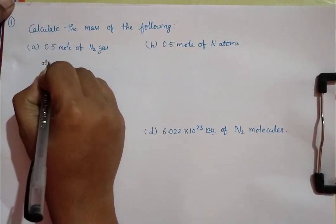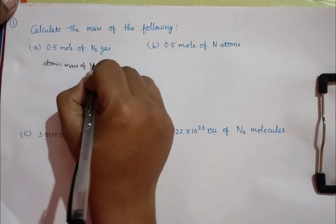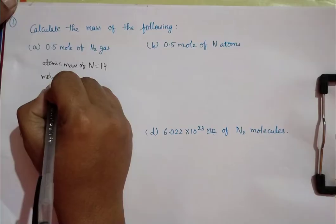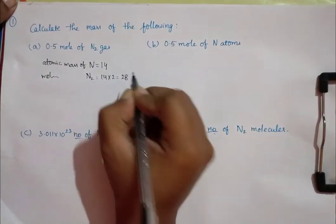First we want to write the atomic mass of nitrogen is 14. So, molecular mass of nitrogen, that is equal to 14 into 2, is 28.